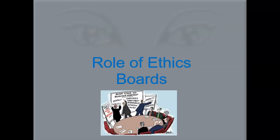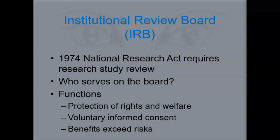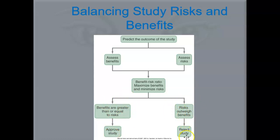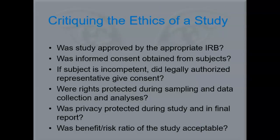The Ethics Board's role is to protect participants and ensure consent is voluntary — no one is being forced. They want to make sure there are more benefits than risks. They follow a flow chart: if there are more benefits, they'll approve the study; if there's more risk and people are getting harmed, they'll reject it and say you cannot go ahead.